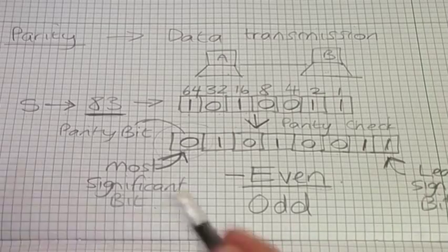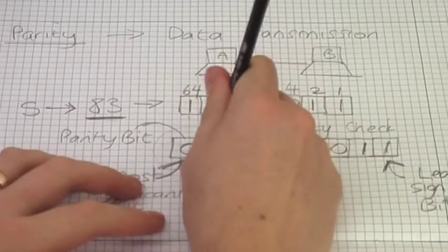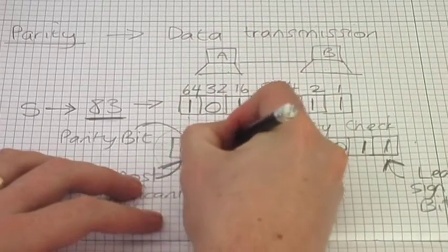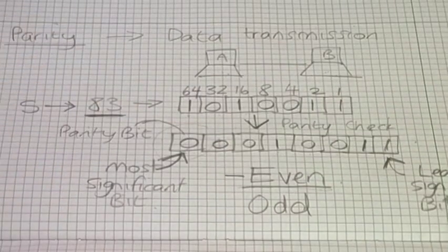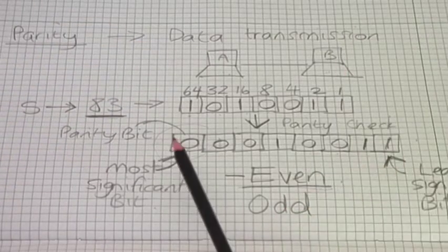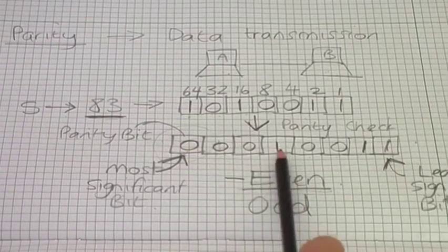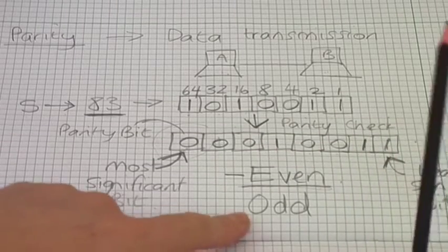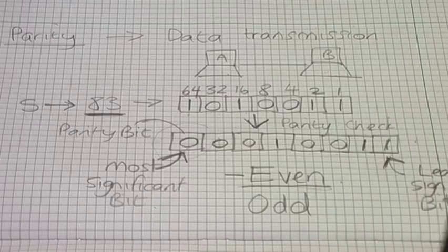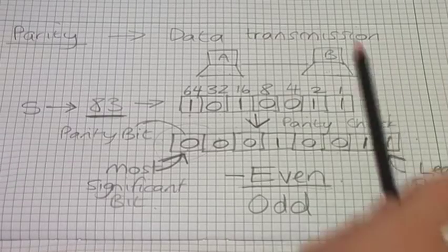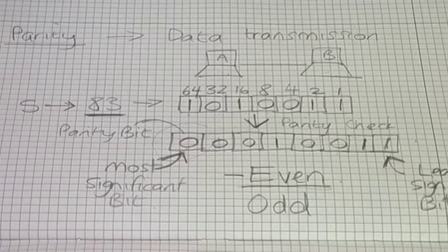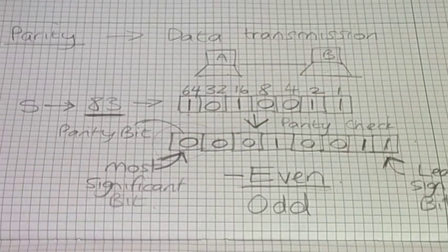I'll show you what would happen if it was received wrongly. If there was a mistake and this was the byte of data received by computer B rather than what was sent by computer A, then computer B checks the number of ones: one, two, three — that's an odd number, but we're using even parity, so there must have been a mistake. Computer B is going to send a message to computer A saying: can you resend that byte of data?